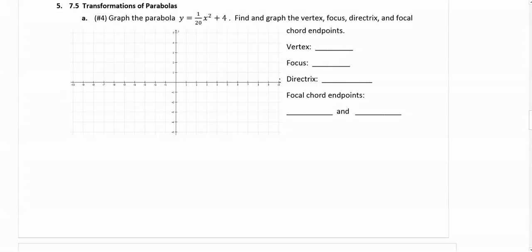Number five is from section five on transformations of parabolas. This first problem, part A, is taken from worksheet five, number four. It says to graph the parabola Y equals one over twenty X squared plus four, find the vertex, focus, directrix, and the focal chord endpoints.